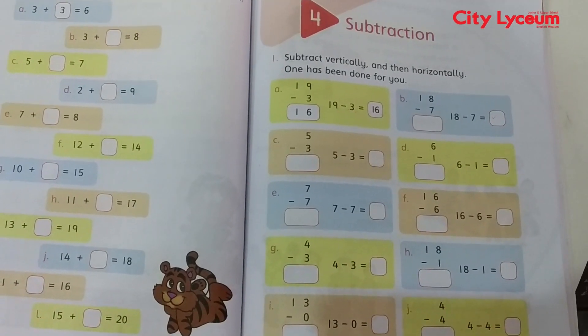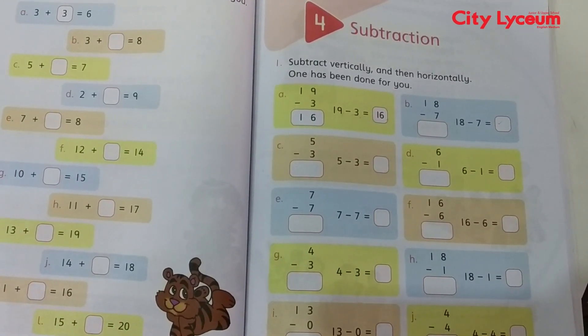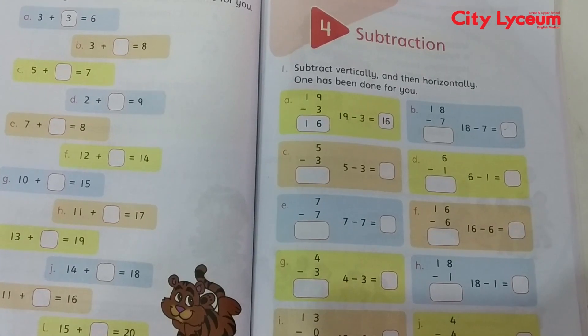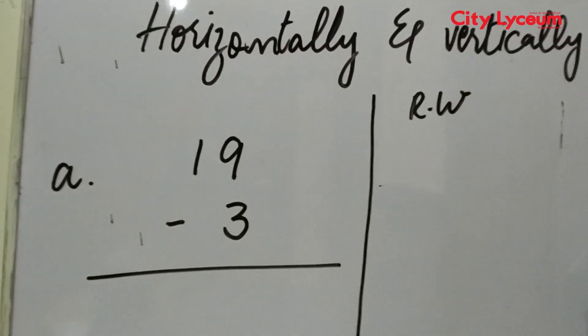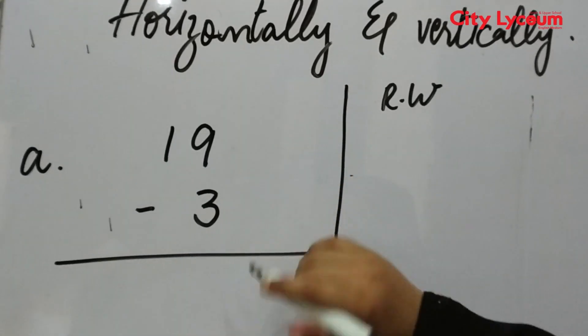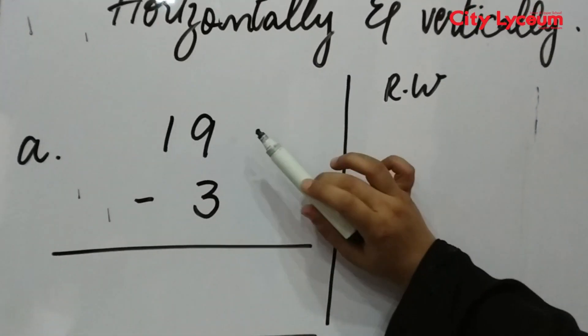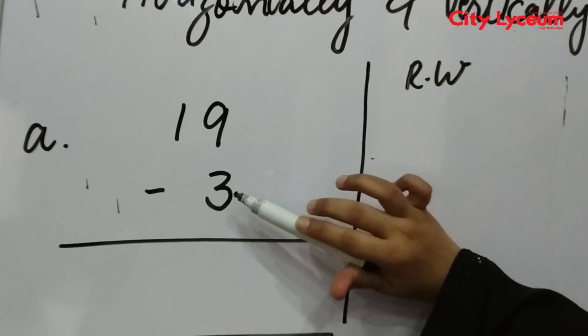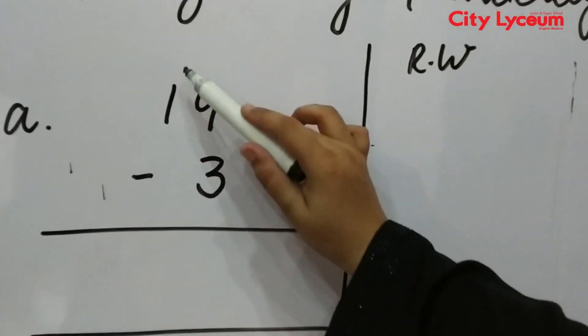Come here. Now you can see here I have written vertically. You can see what I have written: 19, and we have written 3 below.